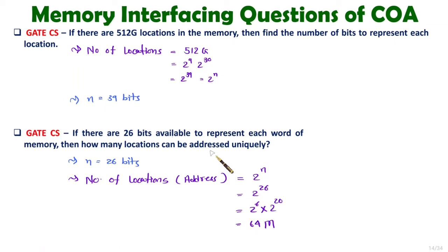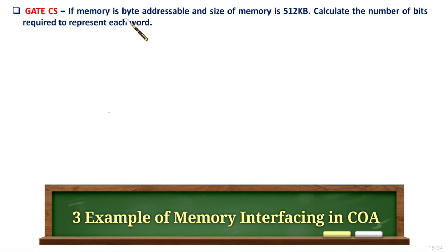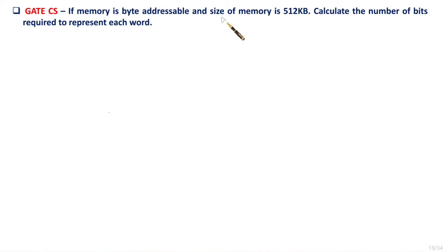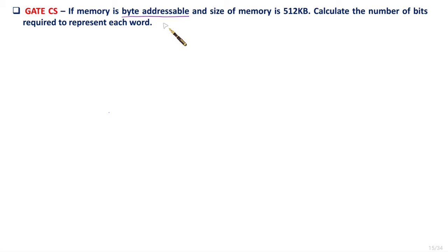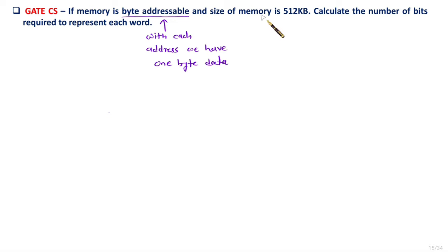In the third question, if memory is byte addressable and the size of memory is 512KB, then calculate the number of bits required to represent each word. It is given that memory is byte addressable. Byte addressable means with each address you have 1 byte of data. The size of memory is 512KB. Here, 512K explains the number of addresses, and B explains how much data is there with a single address.